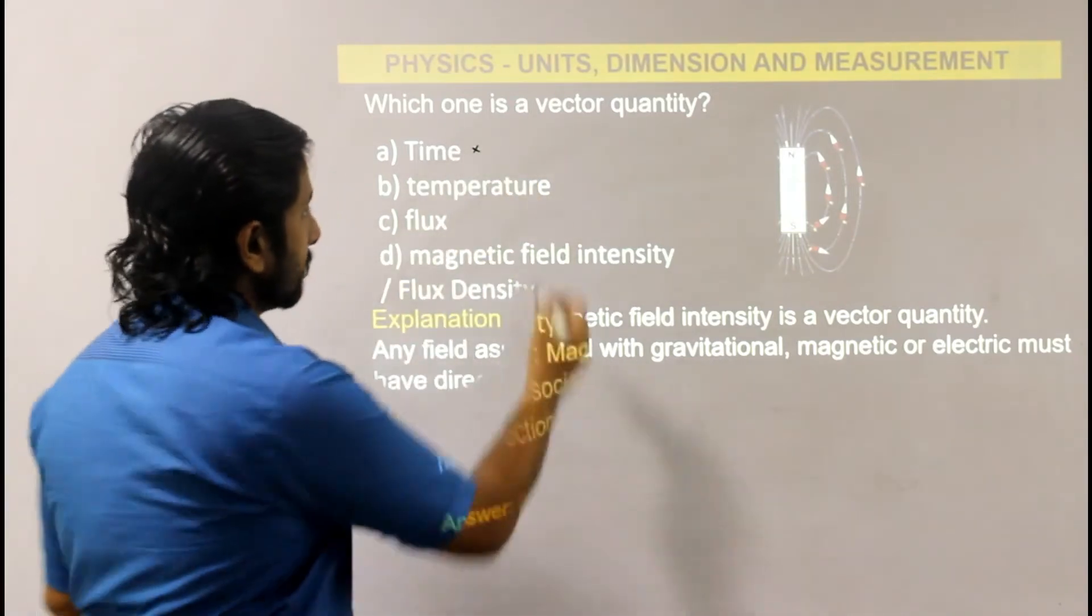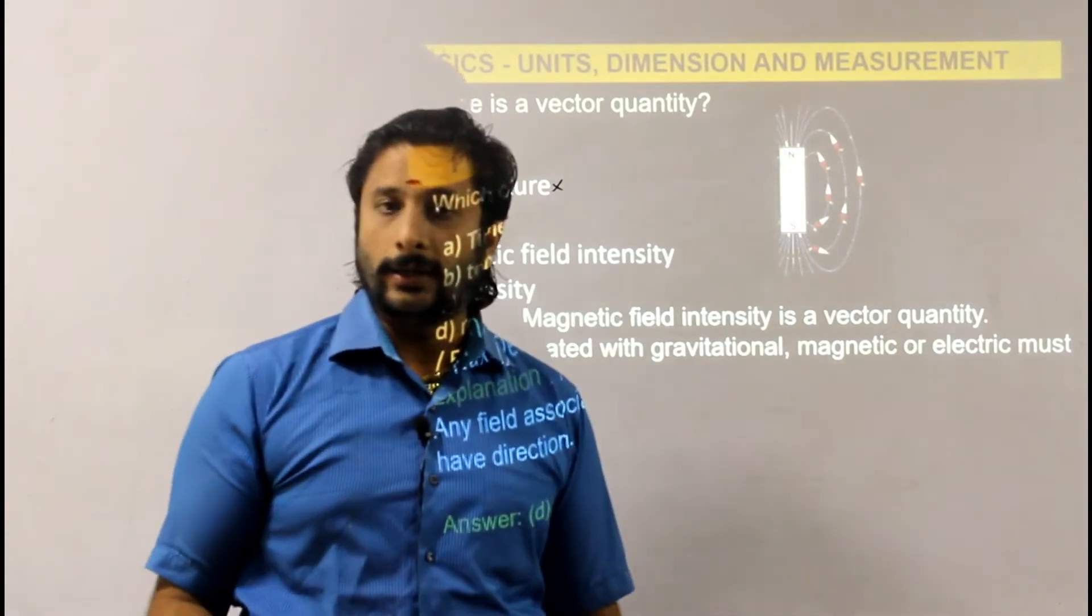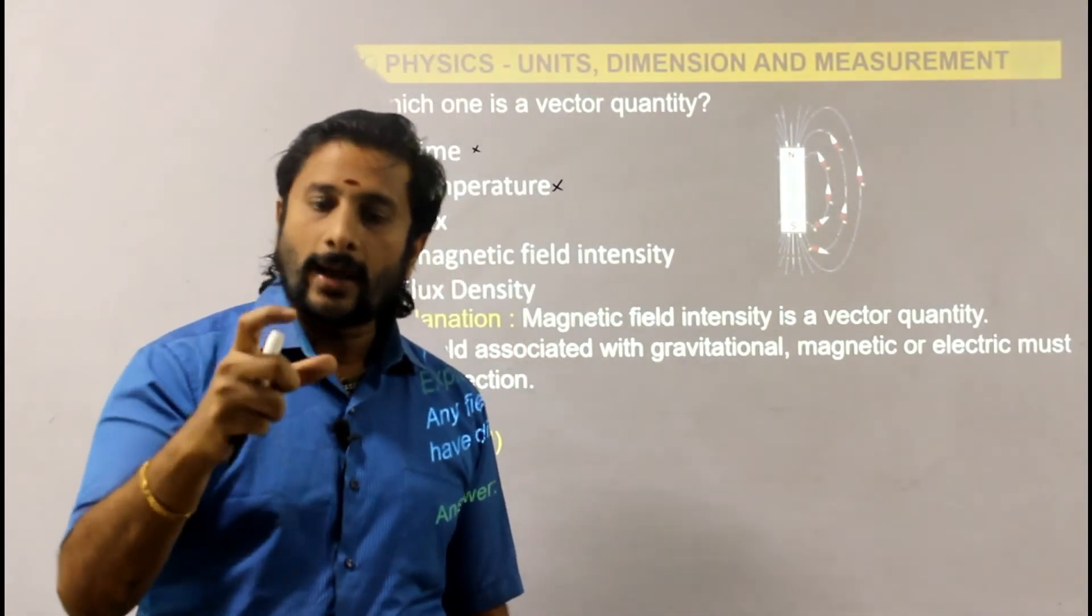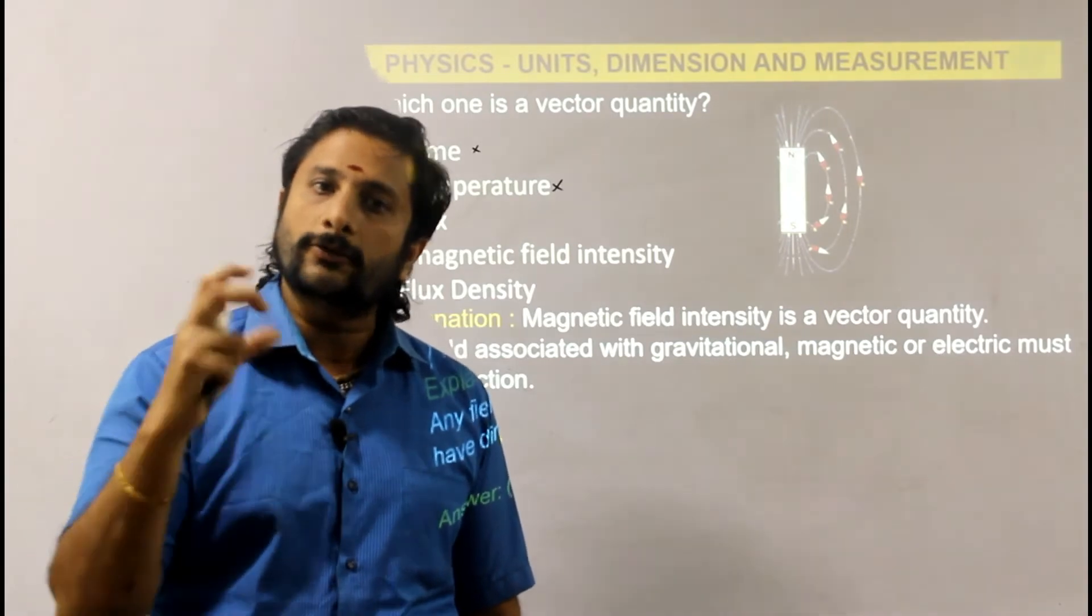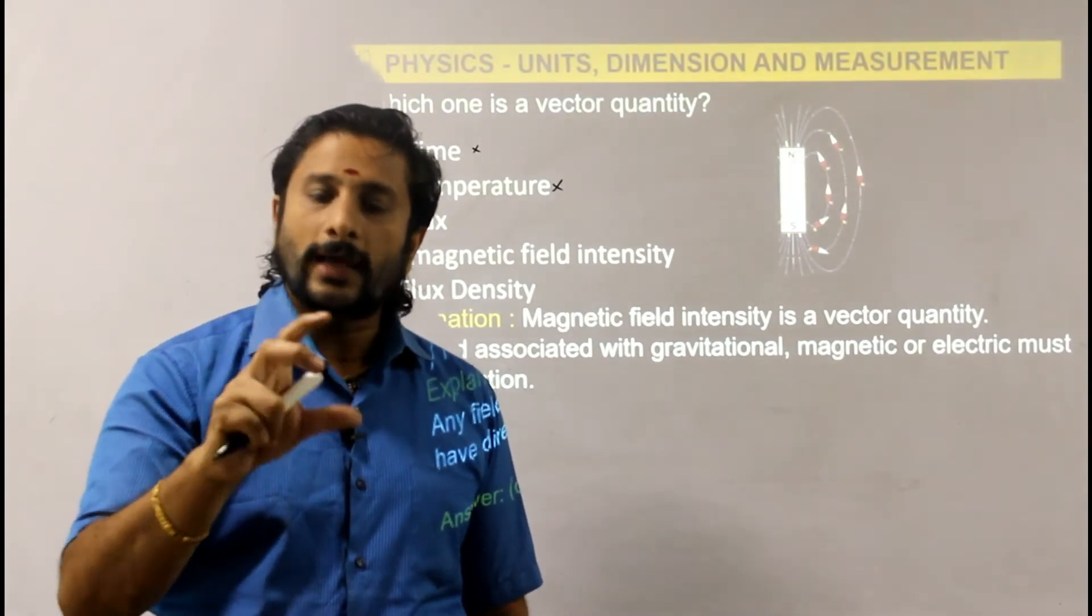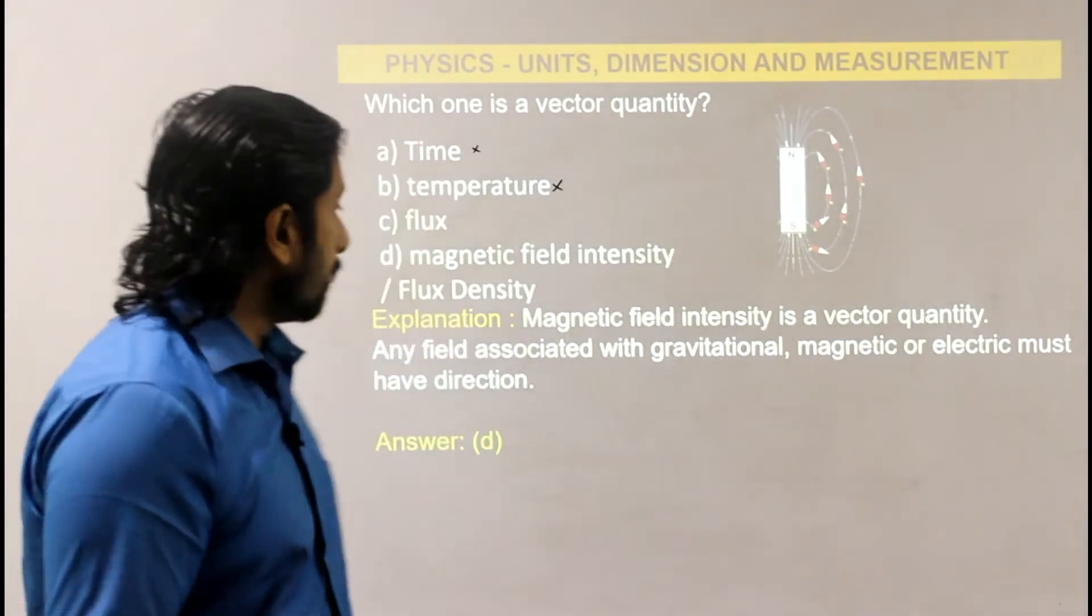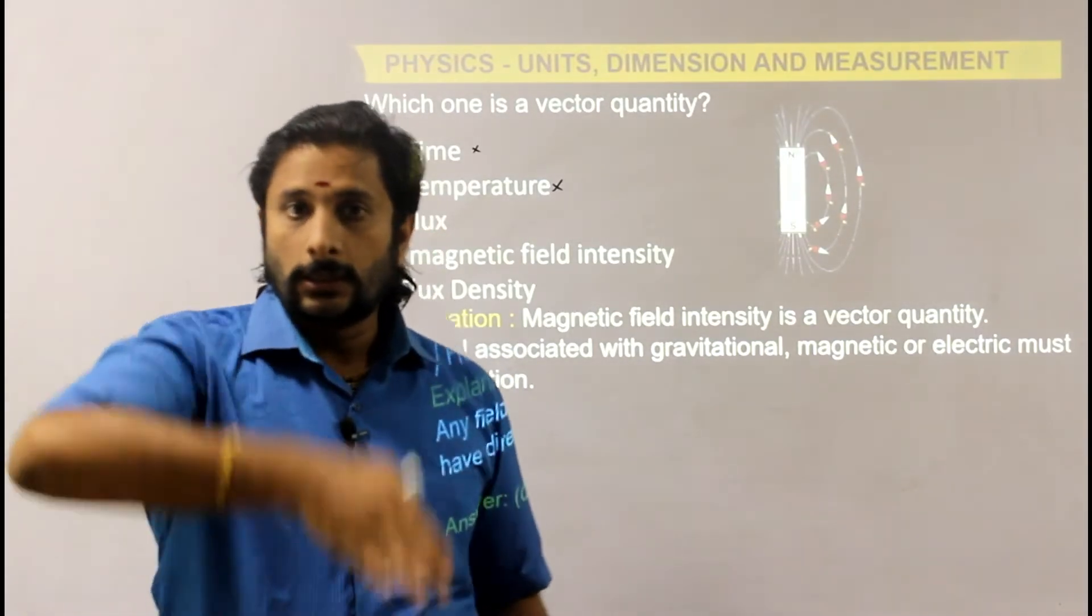Flux - this is a magnetic property. Flux doesn't have direction. It's a scalar quantity.